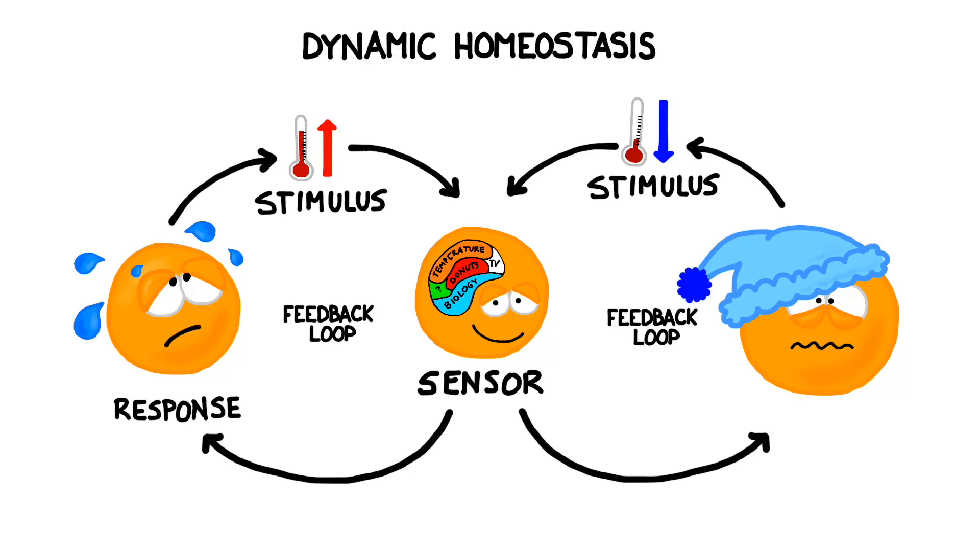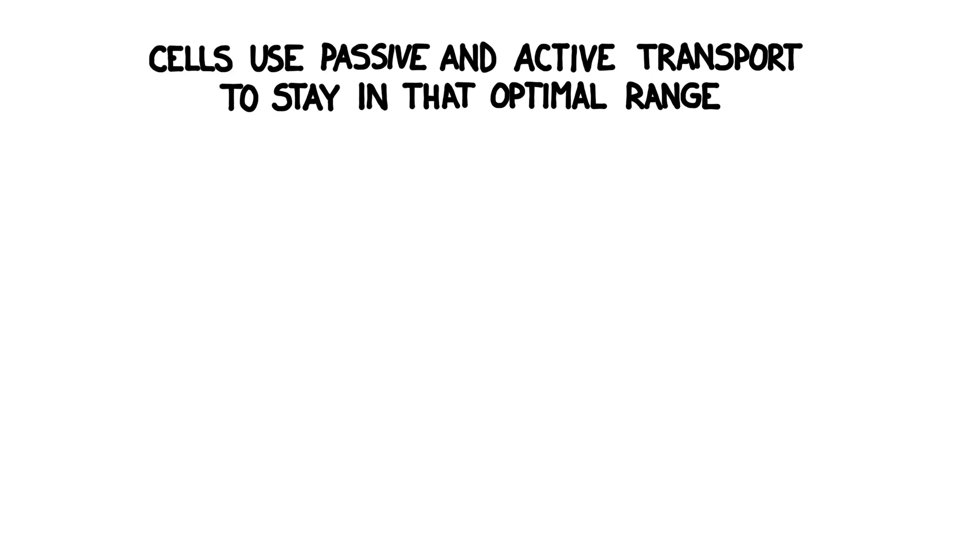The process of constantly adjusting certain variables is known as dynamic homeostasis. Usually, it involves feedback mechanisms called negative feedback loops. Cells use both passive transport and active transport to move materials in and out. However, the size and polarity of the molecules will determine how they can get across the membrane.